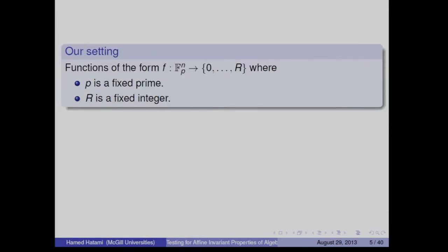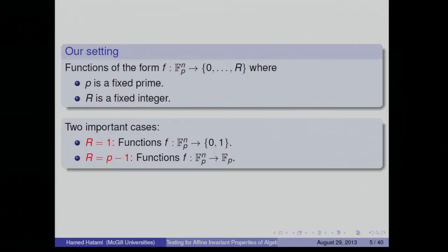In our algebraic setting, my functions are functions from F_p^n to some finite set {0, …, r}, where p is a fixed prime and r is a fixed integer, and all asymptotics are as n goes to infinity. Two important cases: when r equals 1 we have Boolean-valued functions, and when r equals p−1 we can identify the range with F_p and talk about polynomials and functions over F_p.